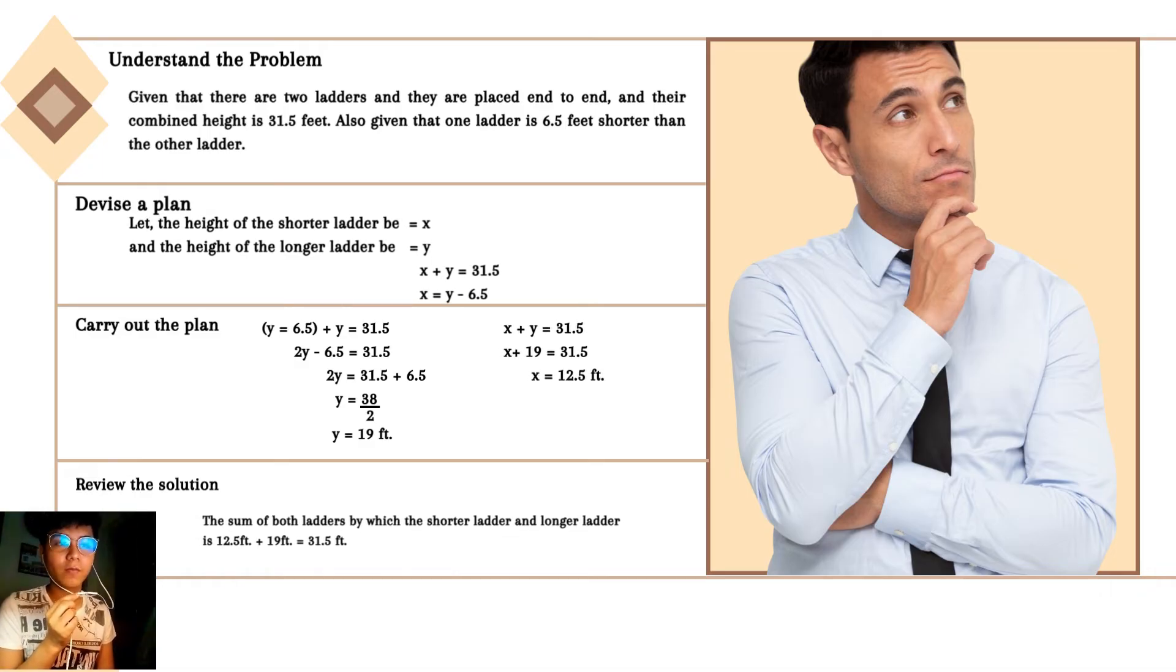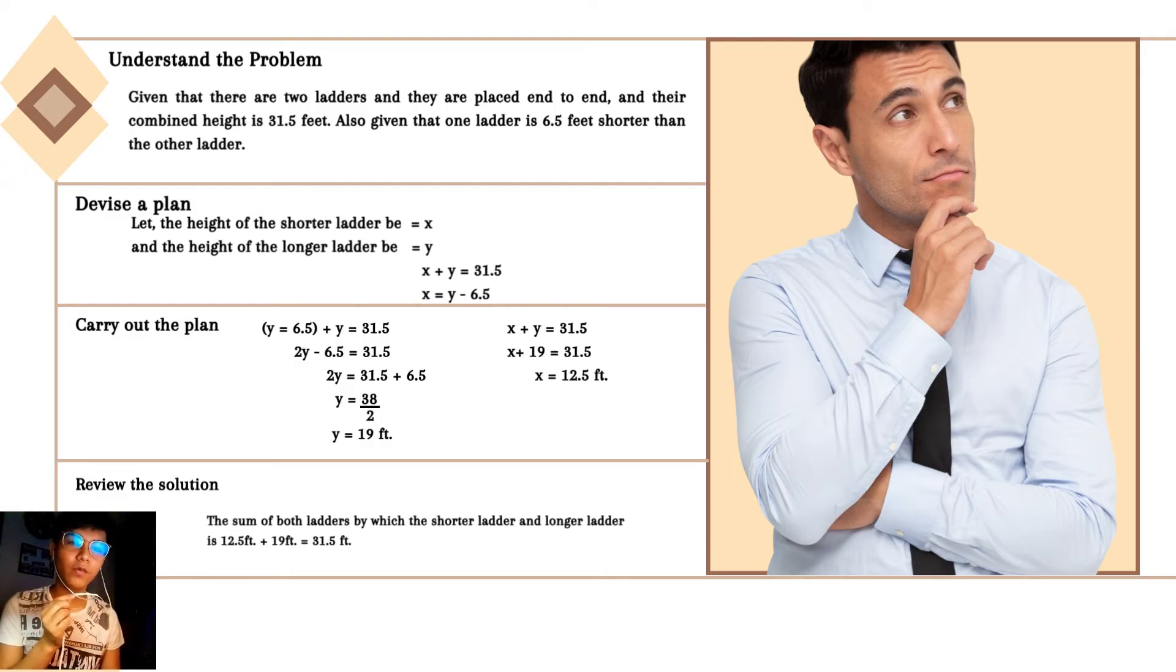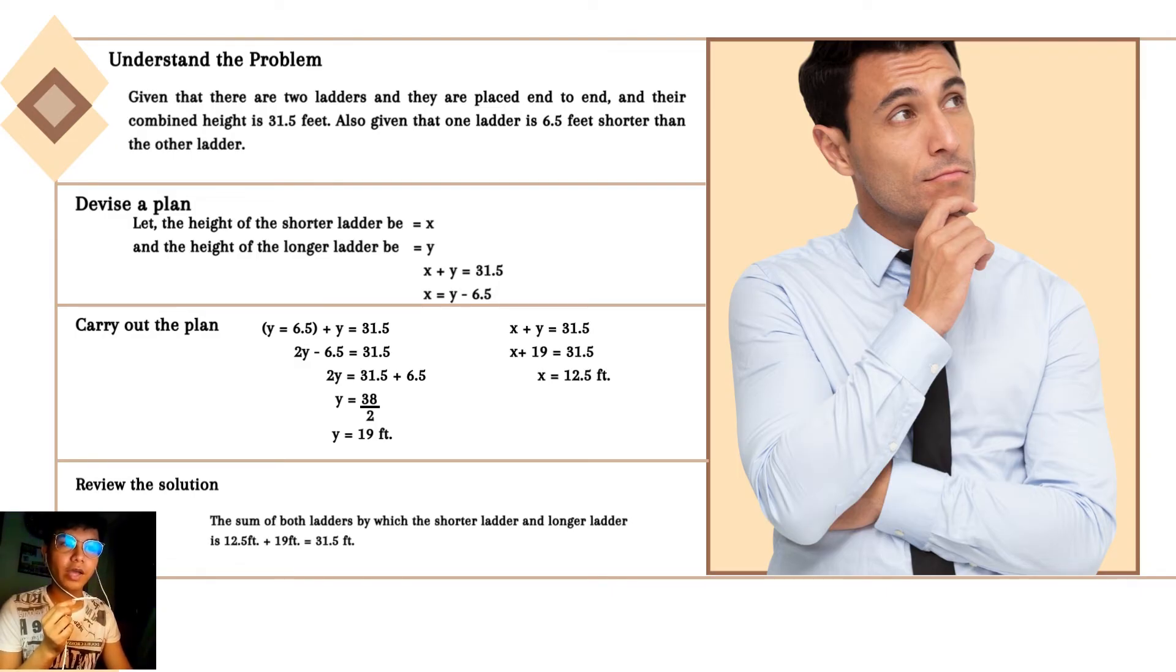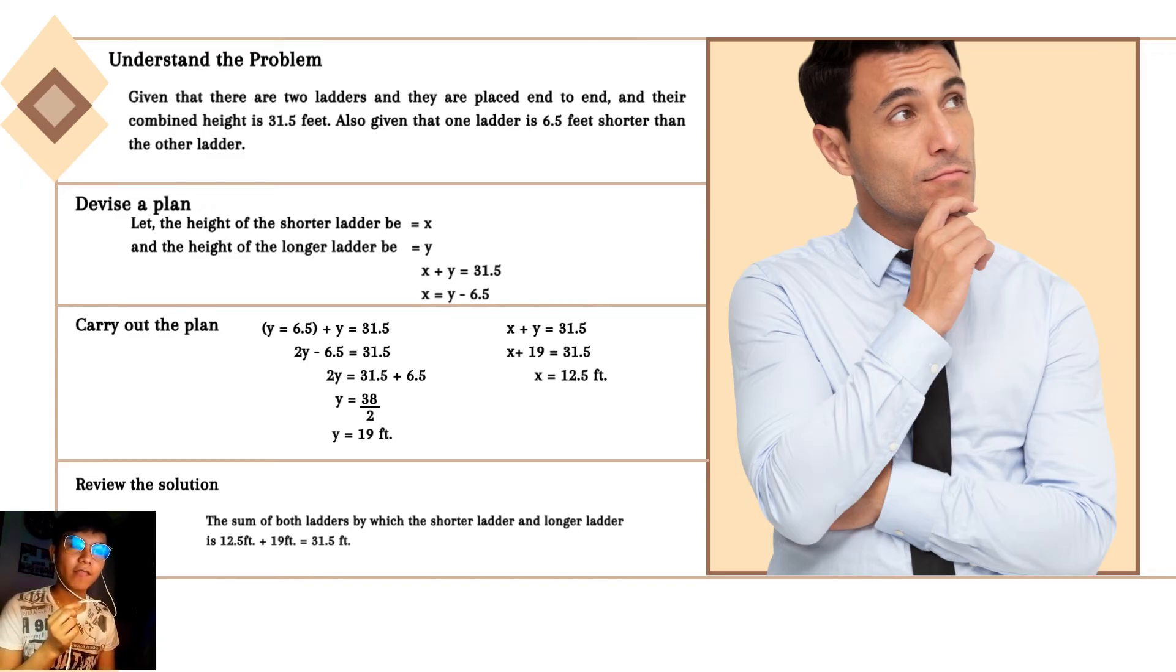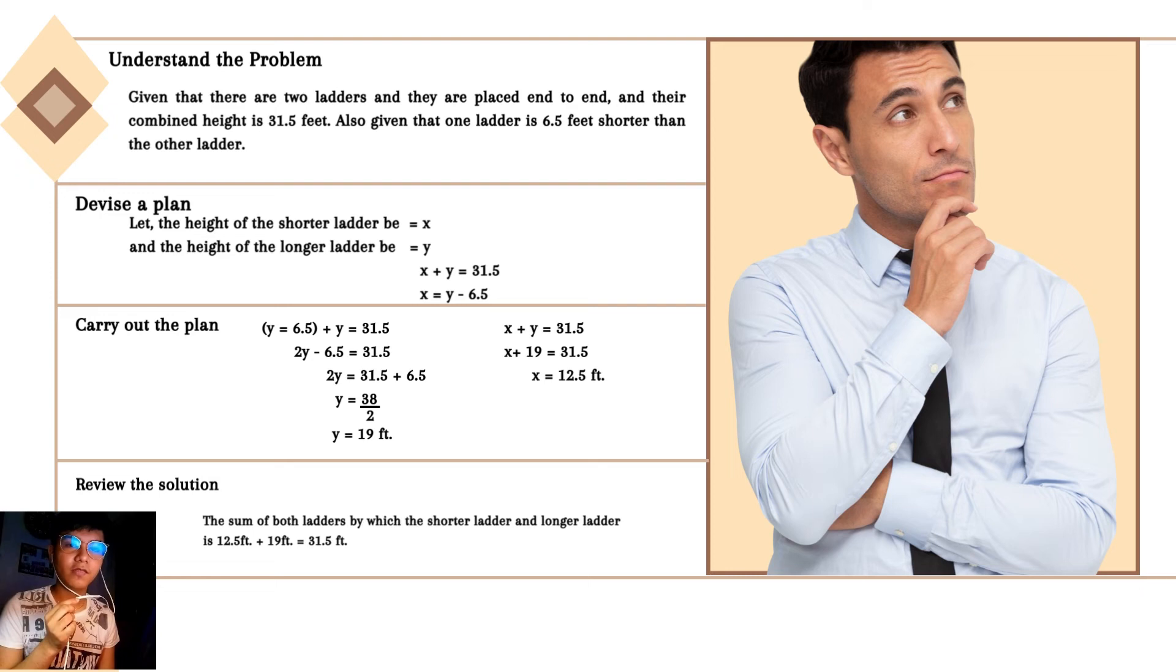Parenthesis Y minus 6.5 plus Y is equal to 31.5. Then we're going to substitute the Y and it will be 2Y minus 6.5 is equal to 31.5. Then 2Y is equal to 31.5 plus 6.5 which equals 38. Then we're going to divide it by 2. The answer will be 19 feet for the Y.